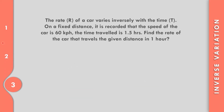Let us solve problem number 3. The rate R of a car varies inversely with the time T. On a fixed distance, it is recorded that the speed of the car is 60 kph and the time traveled is 1.5 hours. Find the rate of the car that travels the given distance in 1 hour. First, we identify the formula: R equals k over t. We may use the formula twice because we have two values of R.